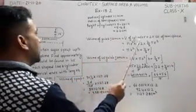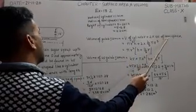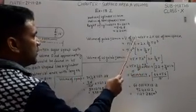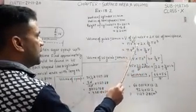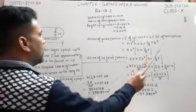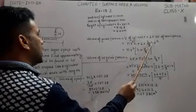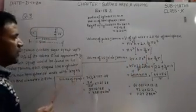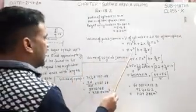Volume of cylinder is πr²h plus 2 into volume of hemisphere, which is 2/3 πr³. Now we can take common πr² from both terms.